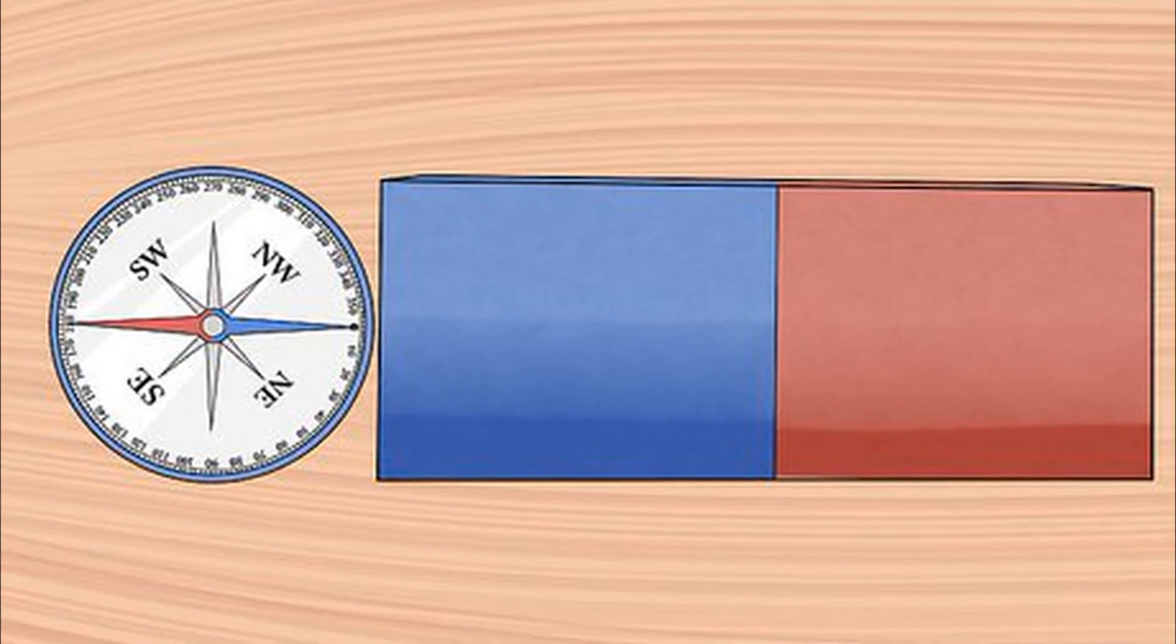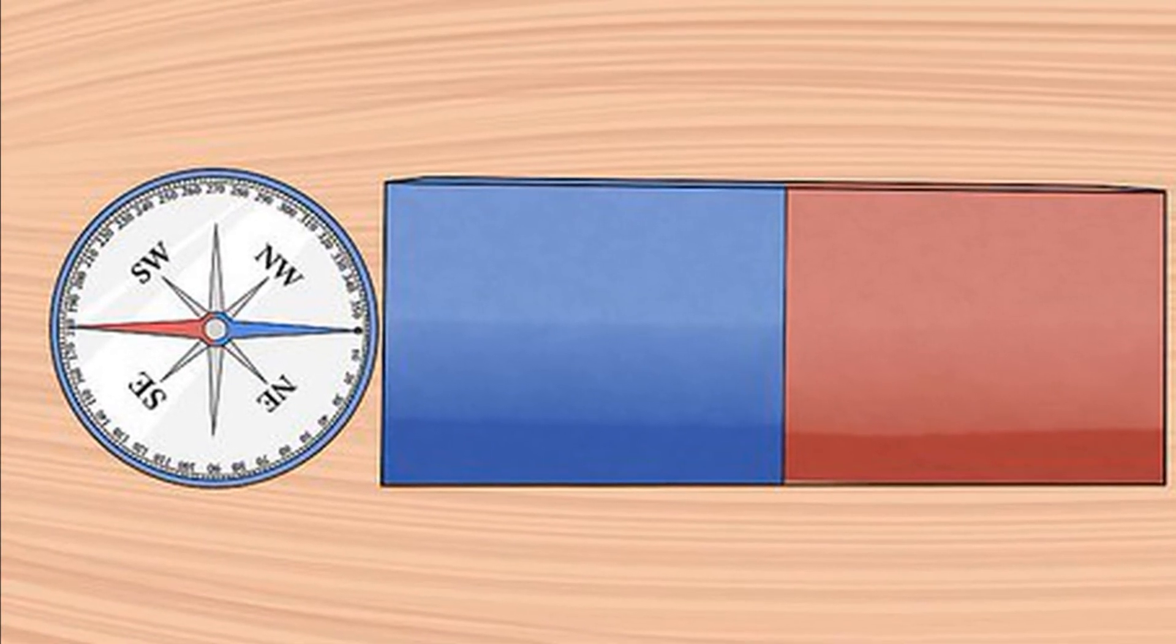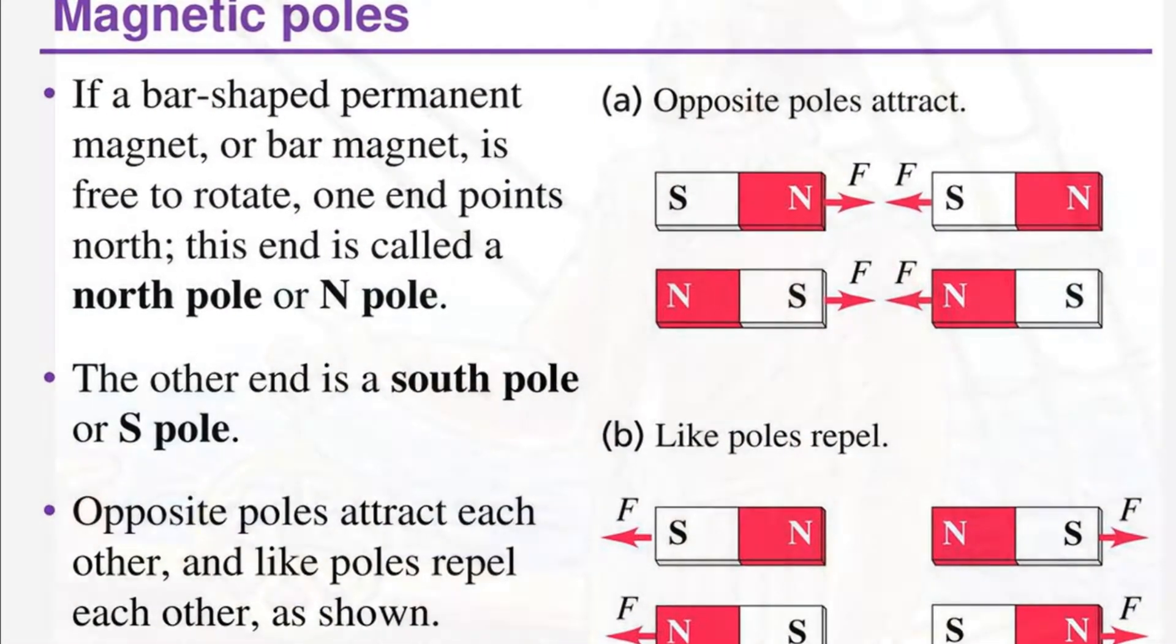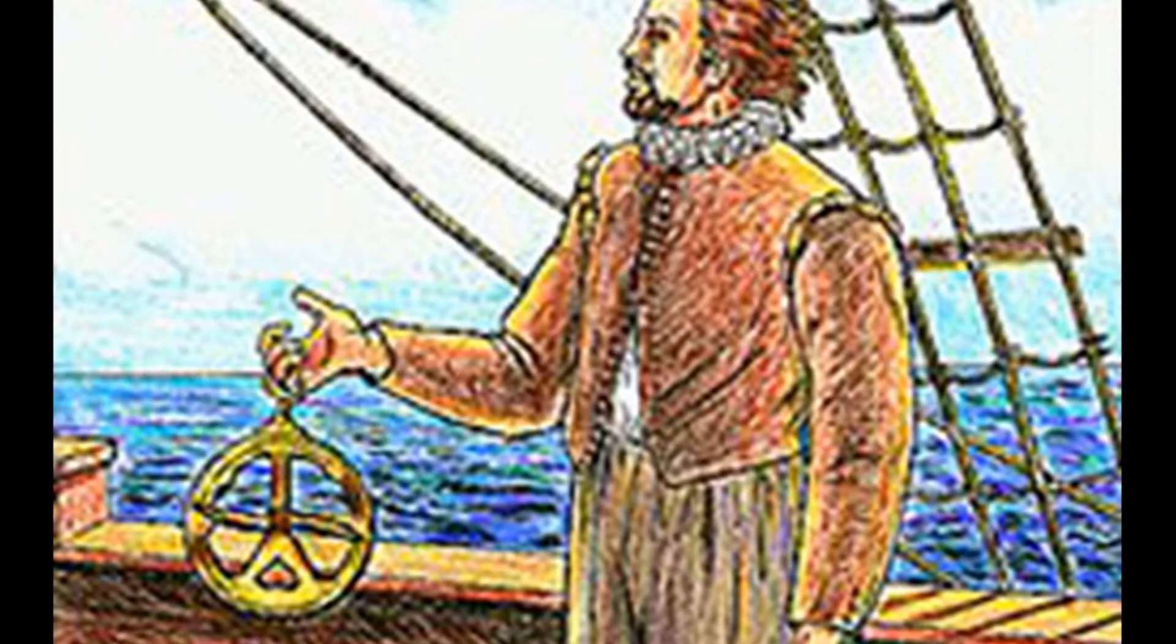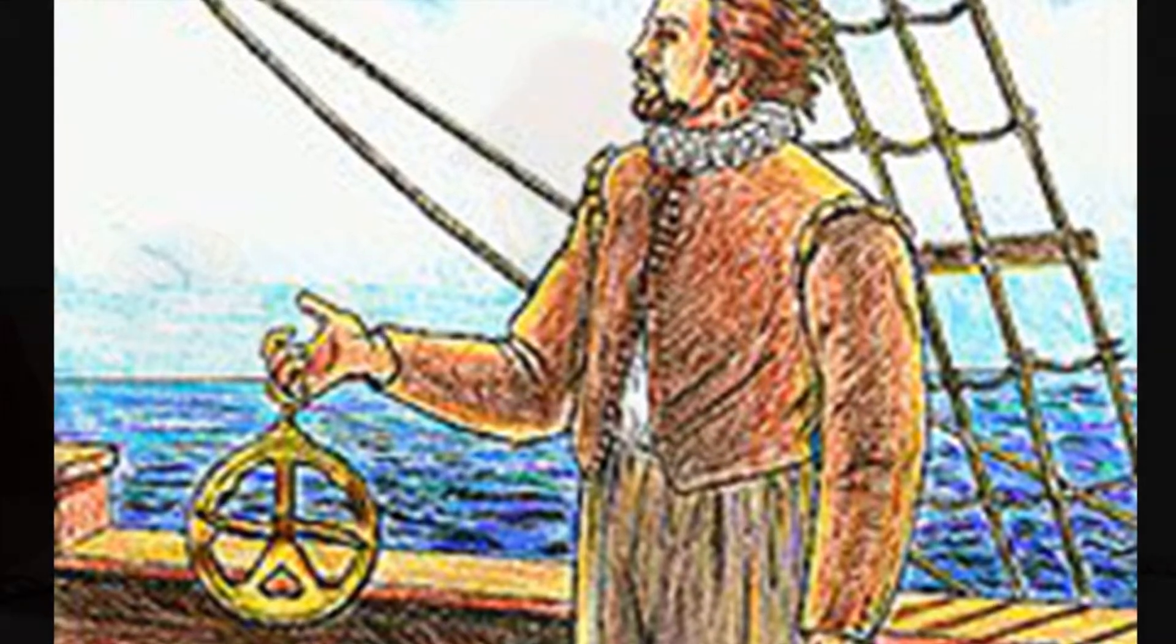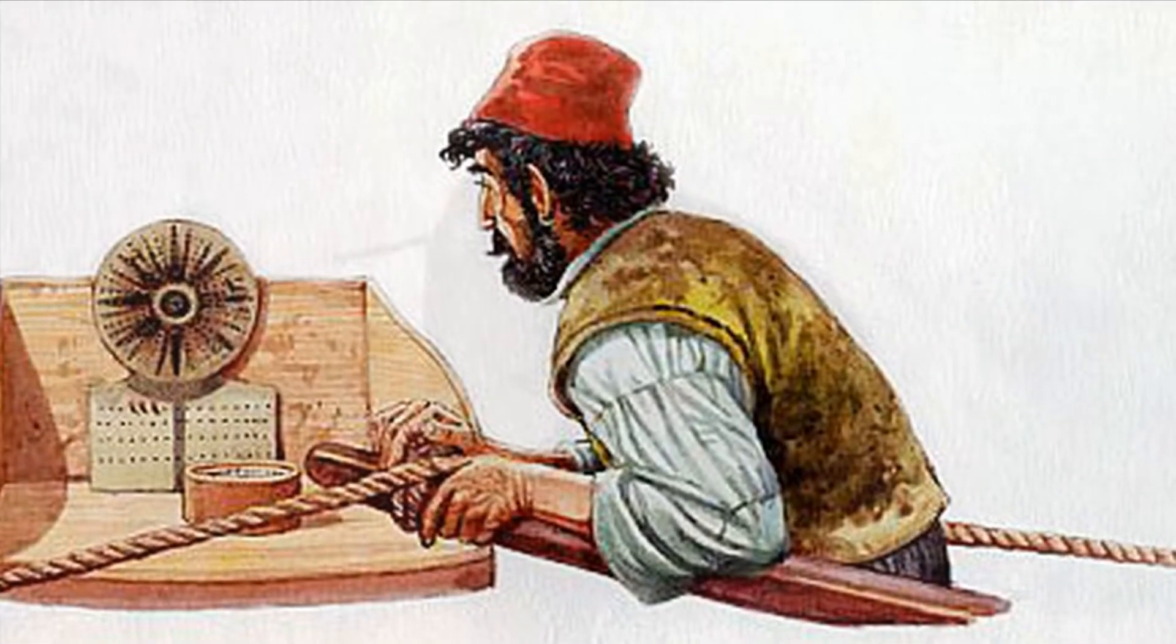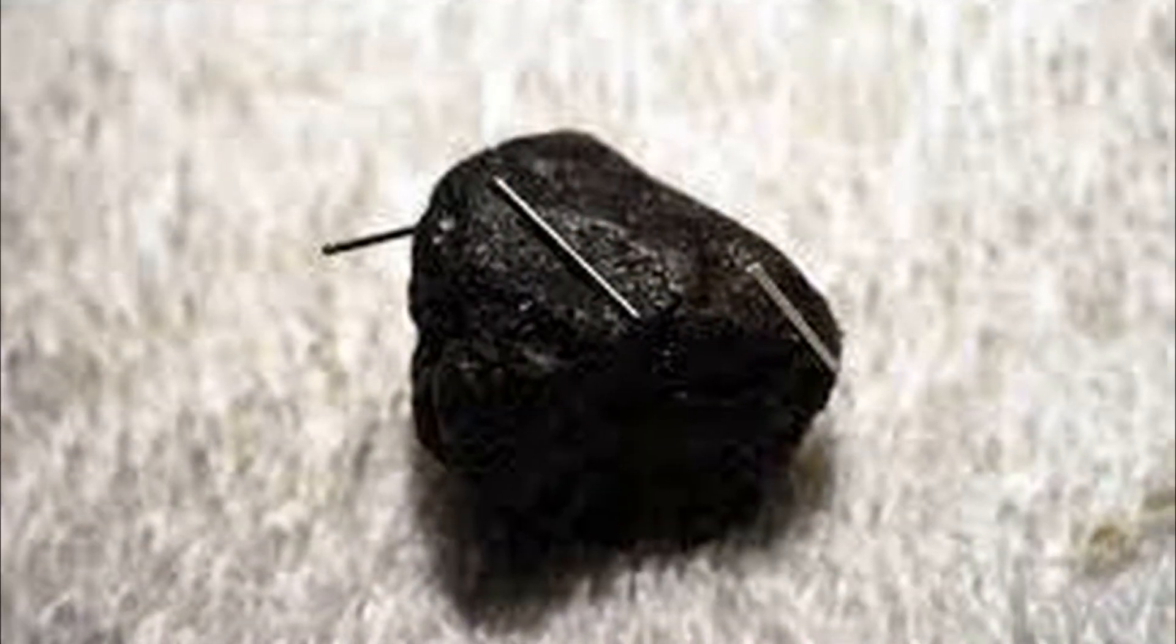The pole pointing towards the north is termed as the north seeking or simply the north pole. The end of the north pole is termed the south seeking pole or simply the south pole. In the 13th century, sailors began using lodestone as a compass to help them find their way across the seas. The word lodestone means guiding stone.